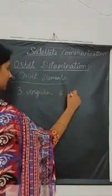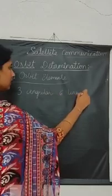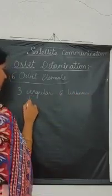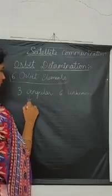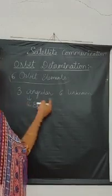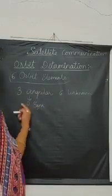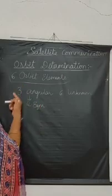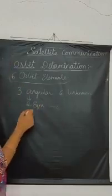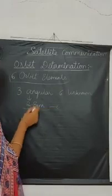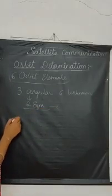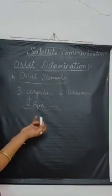We need 6 unknowns and 3 angular measurements to solve for them. We need at least 6 equations. These equations are expressed in terms of angular measurements.